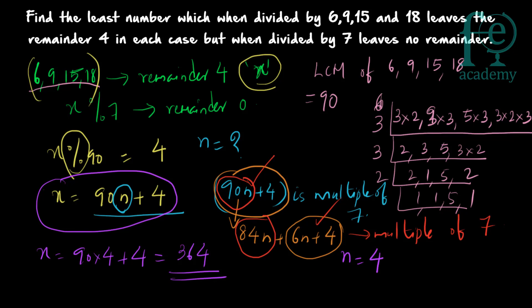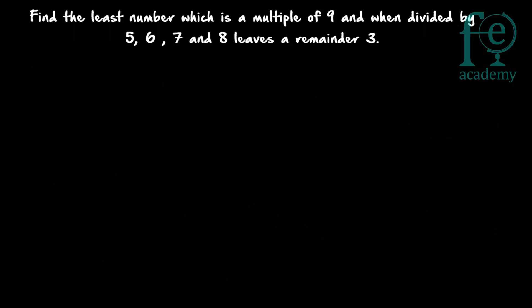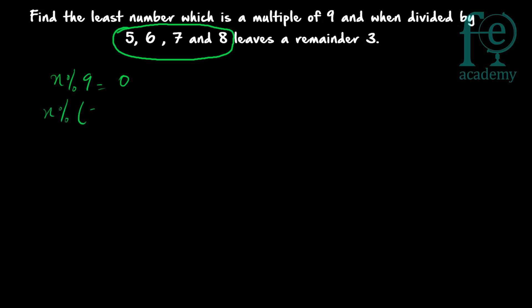Now the second question: find the least number which is a multiple of 9 and when divided by 5, 6, 7, and 8 leaves a remainder 3. This is a similar kind of question. So x modulus 9 = 0 (x is a multiple of 9), and x modulus 5, x modulus 6, x modulus 7, and x modulus 8 are all equal to 3. The first step is to find the LCM of 5, 6, 7, and 8.